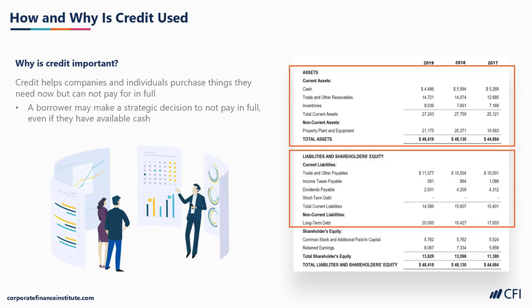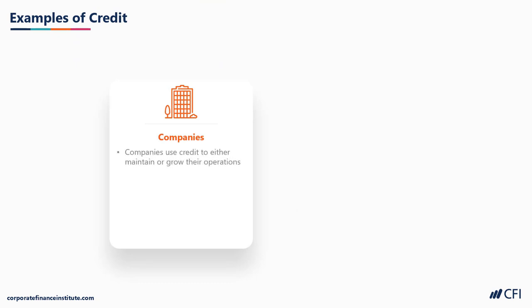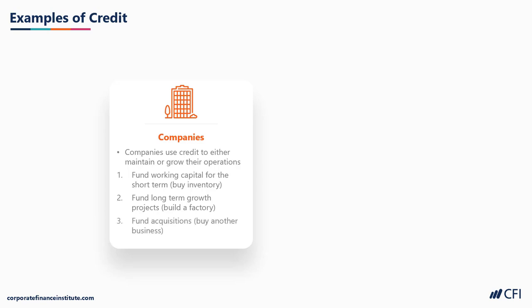Now let's look at some more examples of credit. For companies, there are typically three ways they use credit to operate and grow their business. One is to fund working capital, which is short-term and current assets — it includes items like inventory. Two, funding longer-term growth projects or capital expenditures, such as building a factory. Three, funding acquisitions, which means buying other businesses. These are three of the most common reasons that companies use credit.